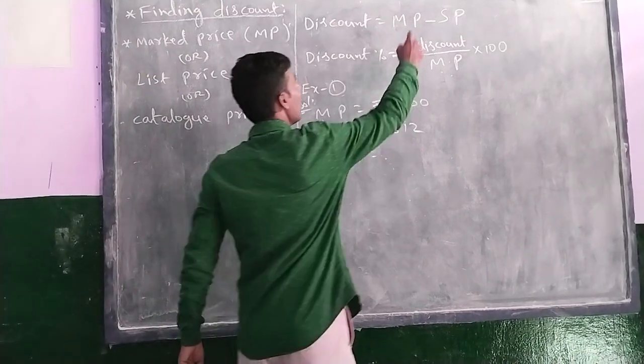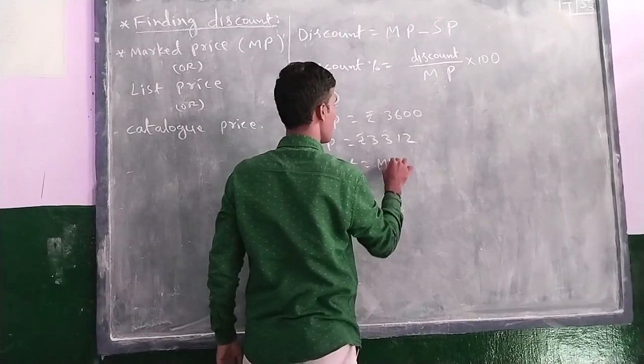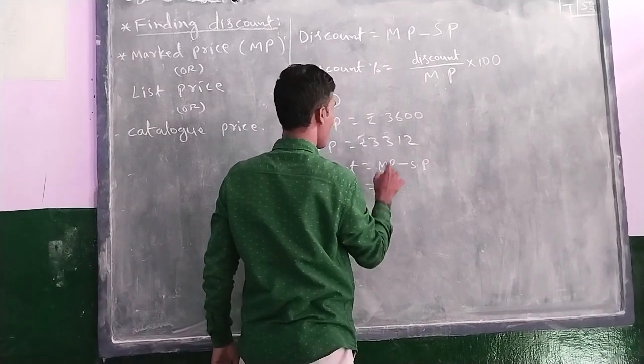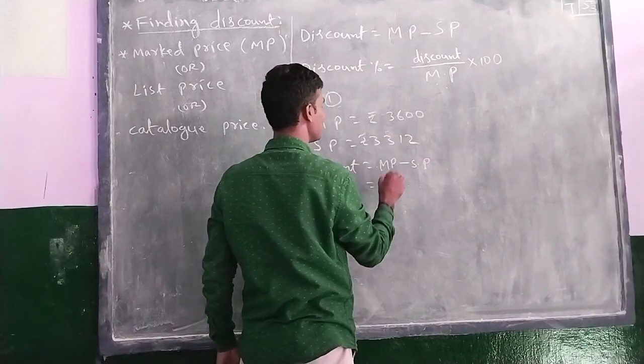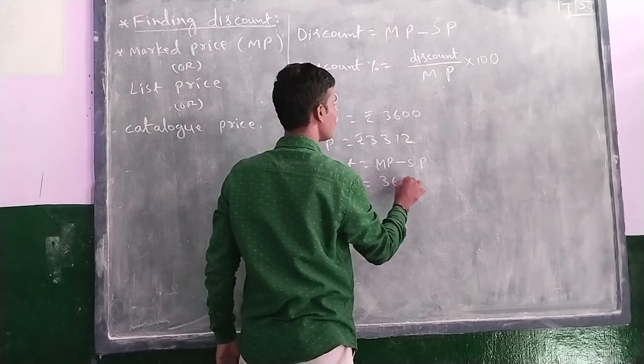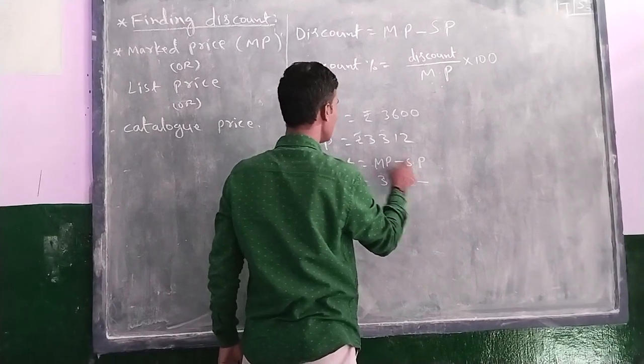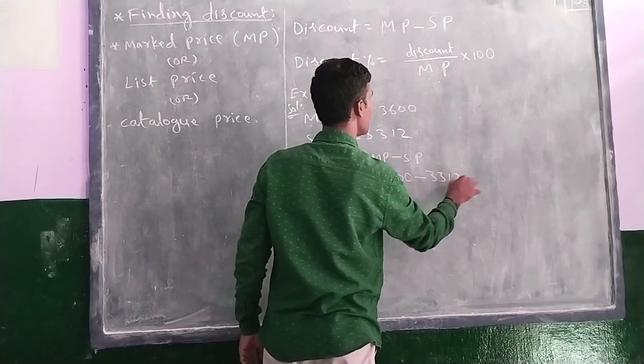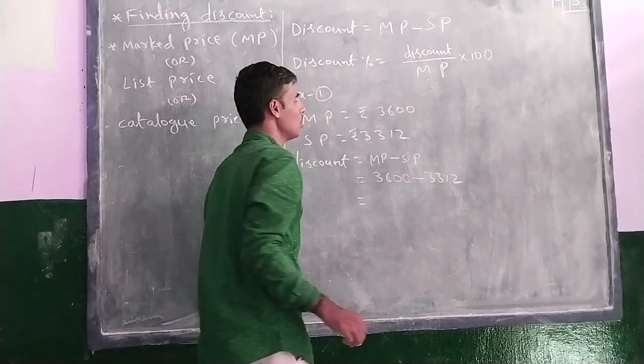Discount equal to market price minus selling price. Market price equal to how much is there here? Rs. 3600 minus selling price equal to how much is there? 3312. Equal to.